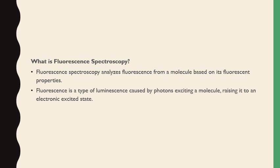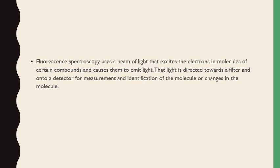Whenever a photon excites a molecule, it raises the molecule to an electronic excited state. Fluorescence spectroscopy uses a beam of light that excites the electrons in molecules of certain compounds and causes them to emit light. That emitted light is directed towards a filter and onto a detector for measurement and identification of the molecule or changes in the molecule.